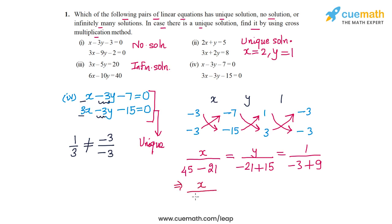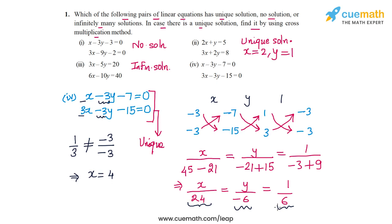Simplifying, we get x by 24 equals y by minus 6 equals 1 by 6. Comparing x by 24 equal to 1 by 6 gives x equal to 24 by 6, which is 4. Comparing y by minus 6 equal to 1 by 6 gives y equal to minus 6 by 6, which is minus 1. So the fourth pair of equations has a unique solution: x equal to 4 and y equal to minus 1.